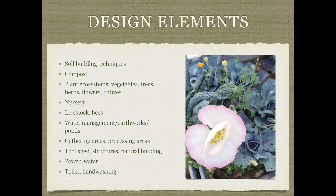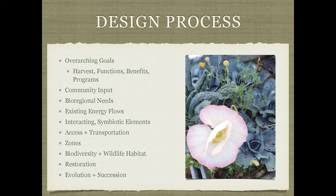Thinking about the design process: we know our principles and the elements we want, so how do we decide where to put them and what goals to prioritize? In community meetings, when you ask community members what they want at the garden, they usually want every single thing on the list. If we don't have space for everything, we want to prioritize the greatest needs of the community that the garden can serve.